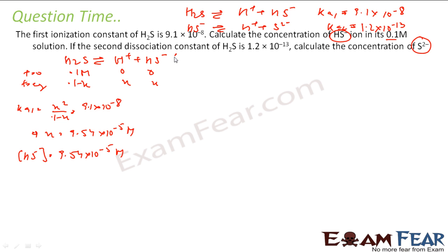Now let's talk about the second reaction. The second reaction is: HS⁻ gives H⁺ plus S²⁻. At T = 0, what is the value?